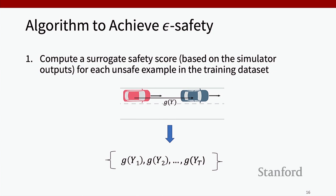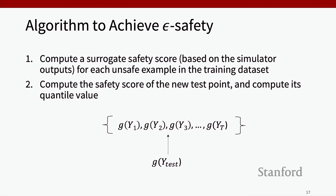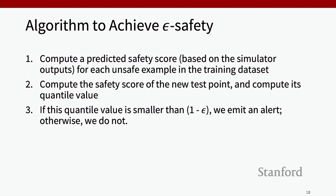Here's our algorithm to achieve epsilon safety. First, we compute a surrogate safety score based on the simulator outputs for each unsafe example in the training dataset — we might get a bunch of predicted nearest distance scores. Then we compute the safety score for the new test point and compute its quantile value — the proportion of training samples with a lower safety score than the new test point. If this new test point is an unsafe example, it should look like previous unsafe examples, so the probability that it happens to be one of the largest scores is very low. This allows us to bound the probability of a false negative. If this quantile value is smaller than 1 minus epsilon, we emit an alert; otherwise we don't.